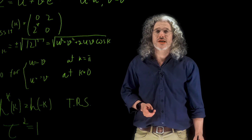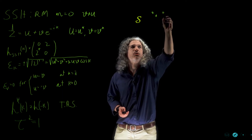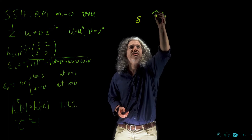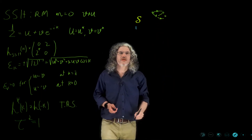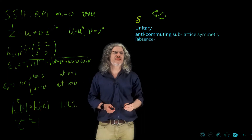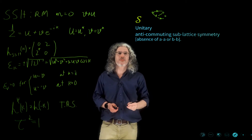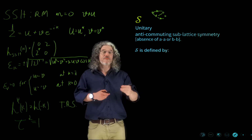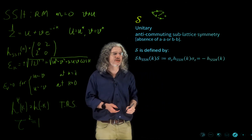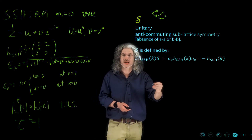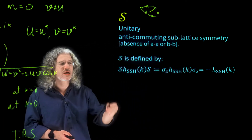Another symmetry of the SSH model is sub-lattice symmetry, because we have atoms A and B and we never allow coupling between AA or BB — only between A and B and B and A. This is a unitary, anti-commuting sub-lattice symmetry. By definition, S is defined by operation with the matrix sigma_Z on the SSH Hamiltonian. Because the Hamiltonian includes only sigma_X and sigma_Y, this gives us minus H_SSH(k), since sigma_X and sigma_Y anti-commute with sigma_Z.